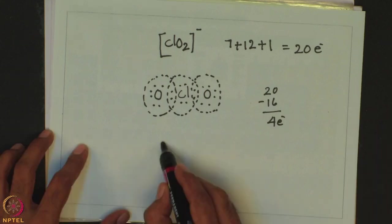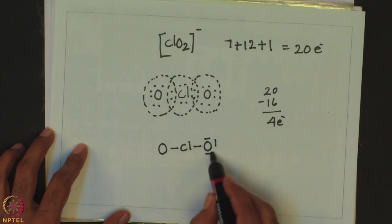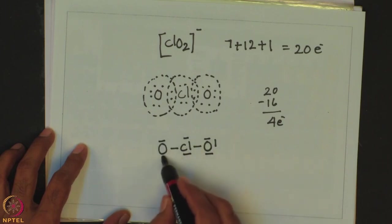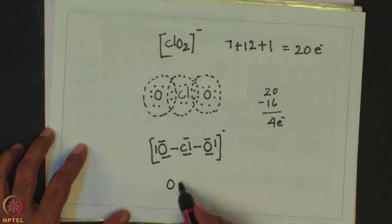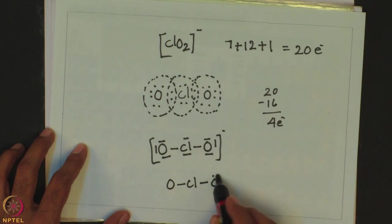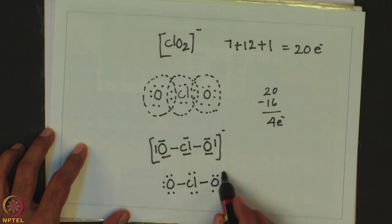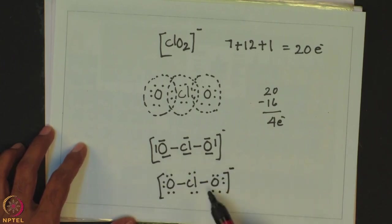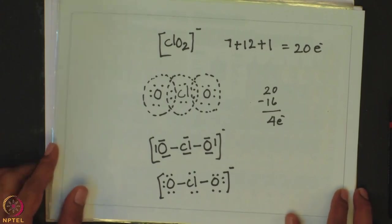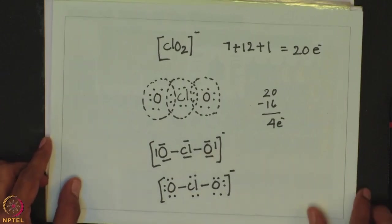There is no need to have any double bond in ClO2⁻. This is how the structure of ClO2⁻ can be explained using Lewis structure. One can write it either with solid lines representing 2 electrons each or using dot structure notation to complete the structure. This is how Lewis dot structure successfully explains bonding in carbon monoxide and also in the ClO2⁻ anion.